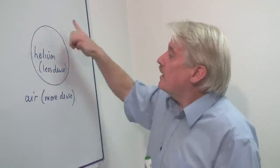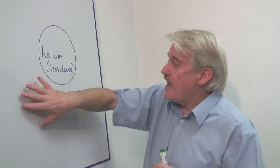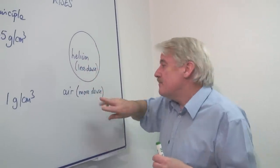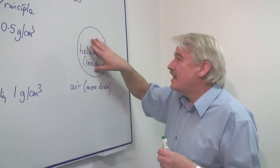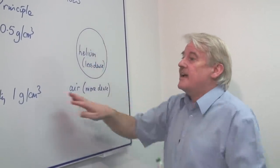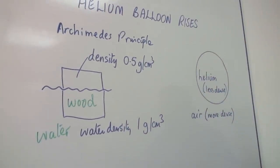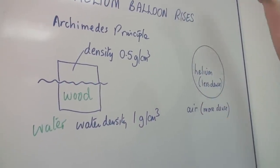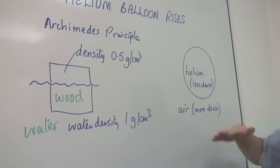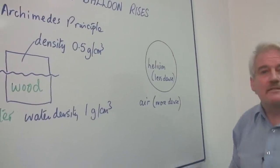So here we have the solution. Air is much more dense than helium, so the helium acts just like the wood and floats up in the air. And of course, there's no surface to the air because the air goes on more or less to the edge of space. So that is why a helium balloon rises.